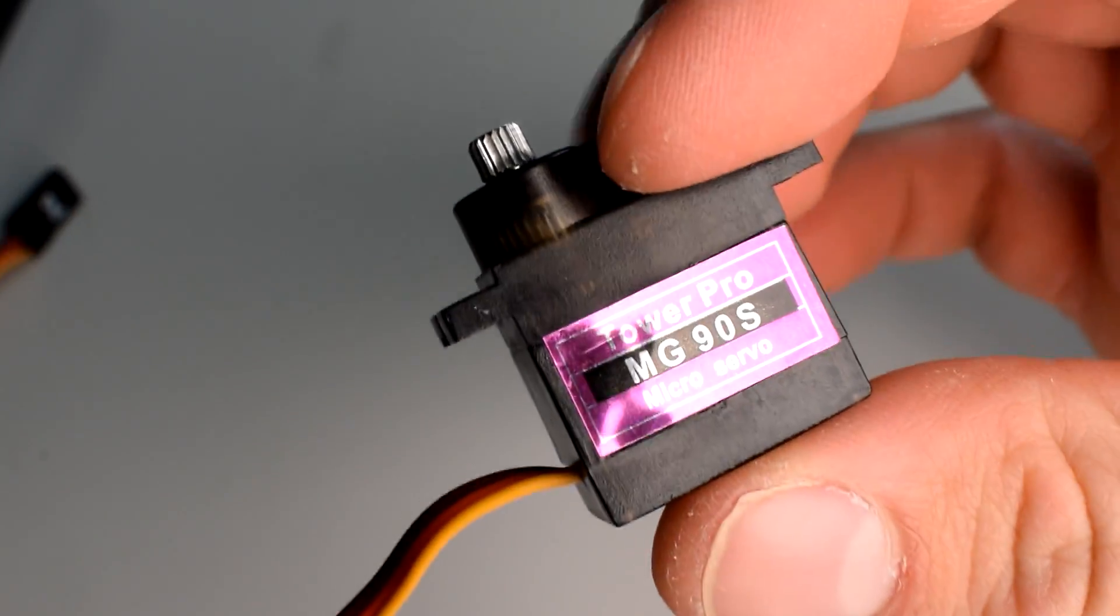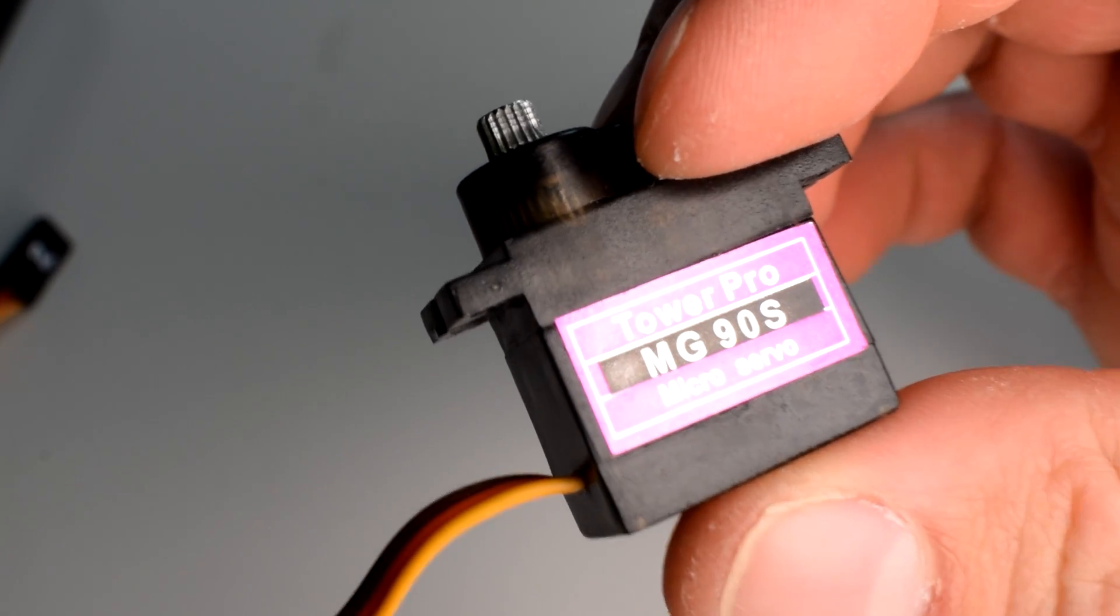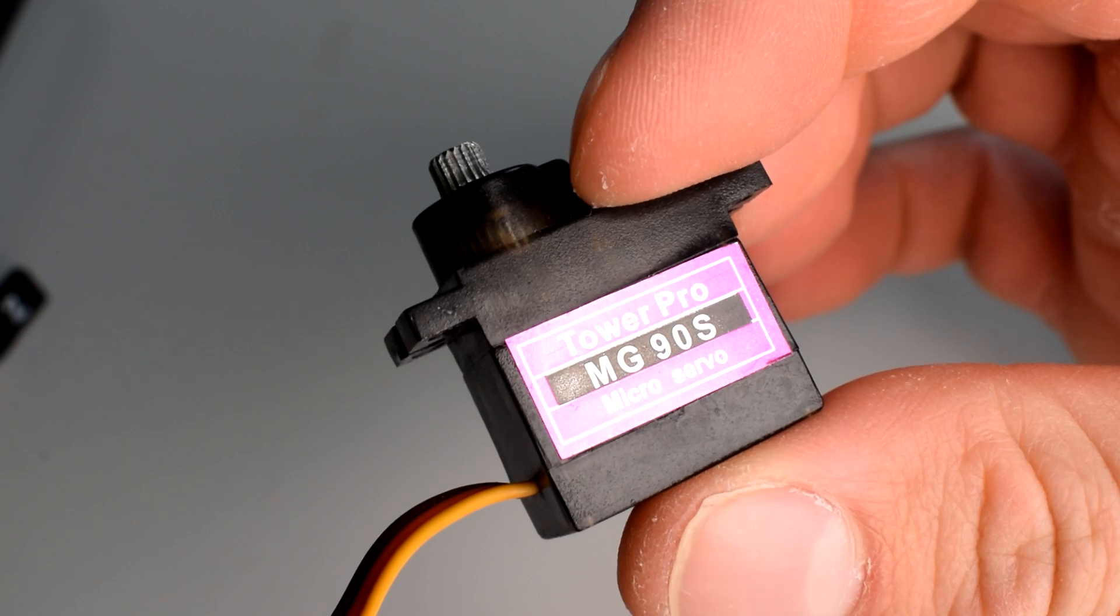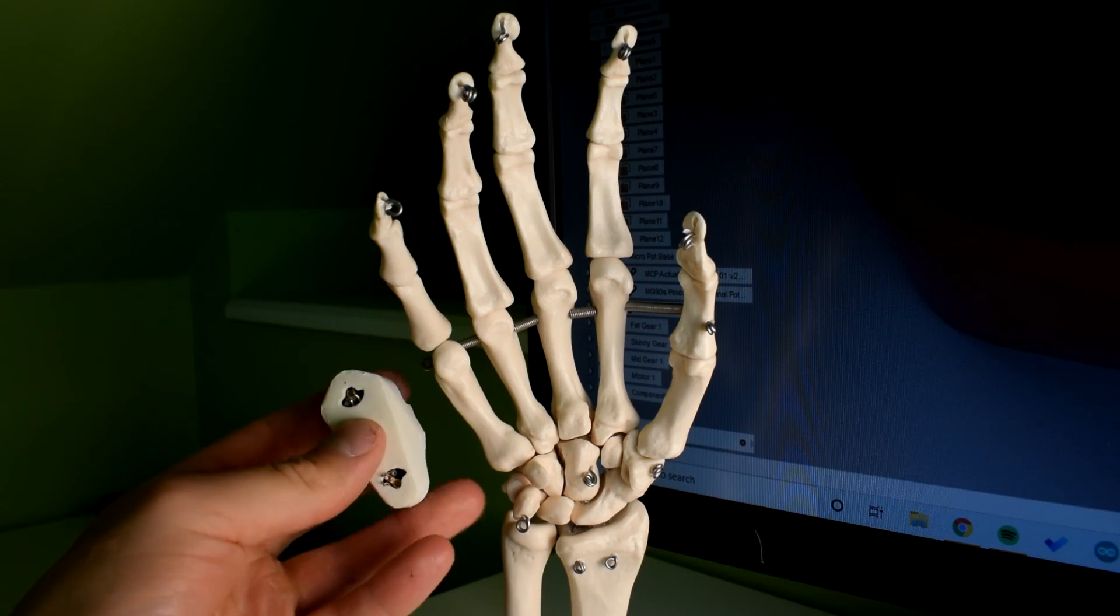Since for this project I'm trying to stick to MG90s servos, since they're so cheap and accessible and I don't really feel bad when I break one of them, I focused on trying to redesign the servo itself to be a flatter form factor and form the structure of the metacarpals in the hand.